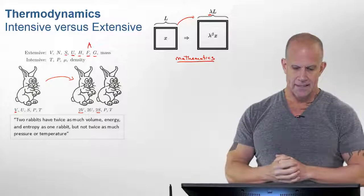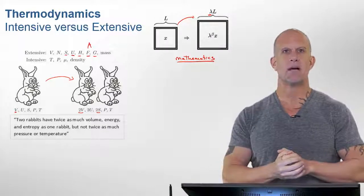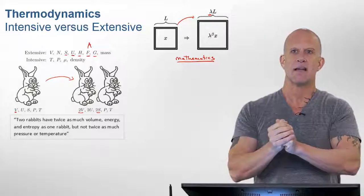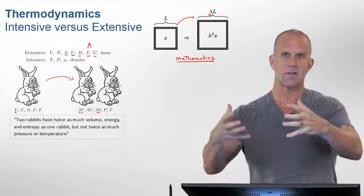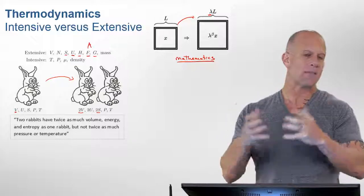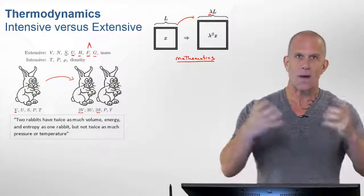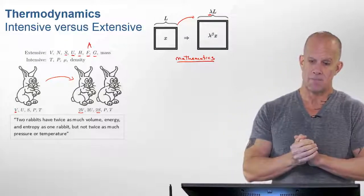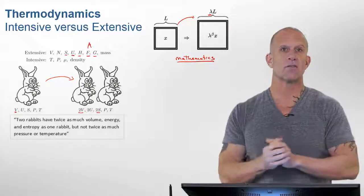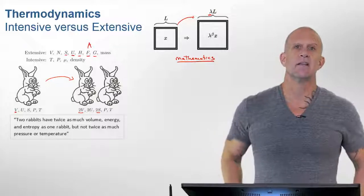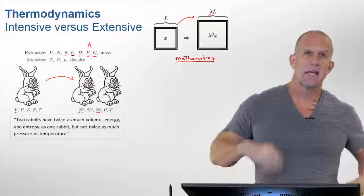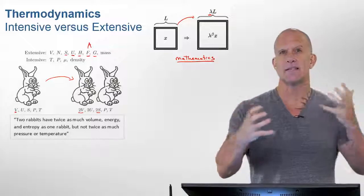But there are other parameters, like for example, the temperature. If this bunny was at 25 degrees and we made two of them, we wouldn't say that now that new system with two rabbits is now at twice the temperature. It's at the same temperature. And assuming it scales in all directions, we would say it's homogeneous. We would say the same about the pressure, the chemical potential, the density of the system.